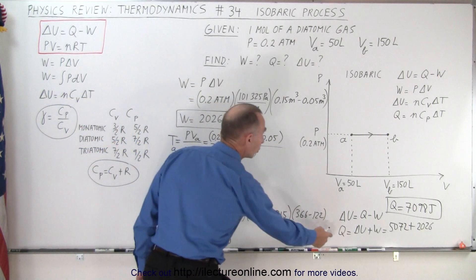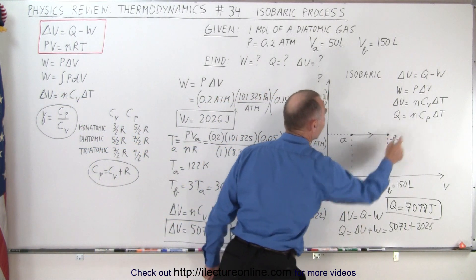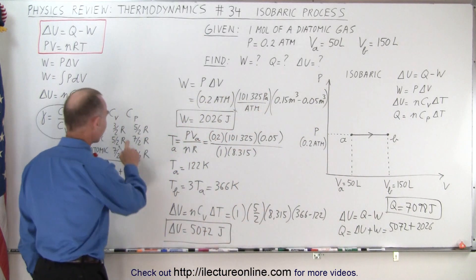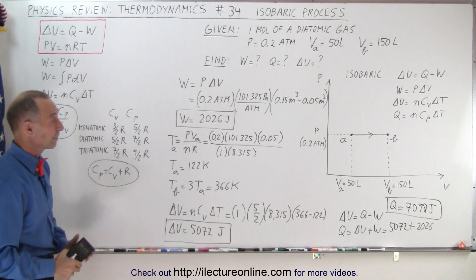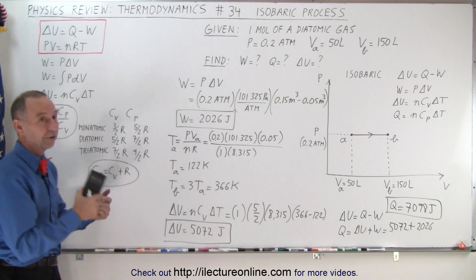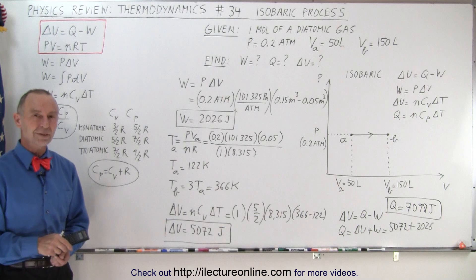If you want to make sure you did this correctly, you can calculate Q by using this equation and use C_p, which in this case would be 7 over 2 R, to see if you get the same result. But I'm pretty confident that you would. So here's a nice example of how to deal with an isobaric process.